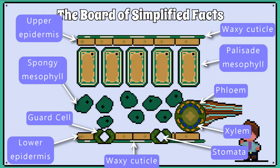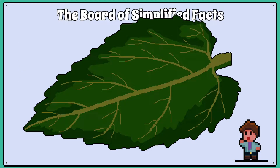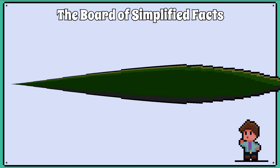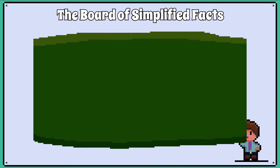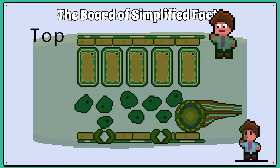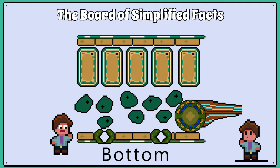We need to be able to label and describe the role of each part in this diagram of the leaf structure. You must imagine that this diagram is a cross section of the leaf as if you're looking at it from the side. So this is the top of the leaf and this is the bottom of the leaf.